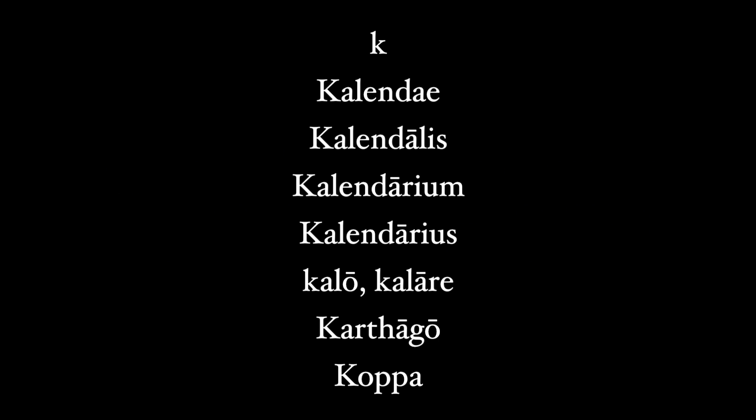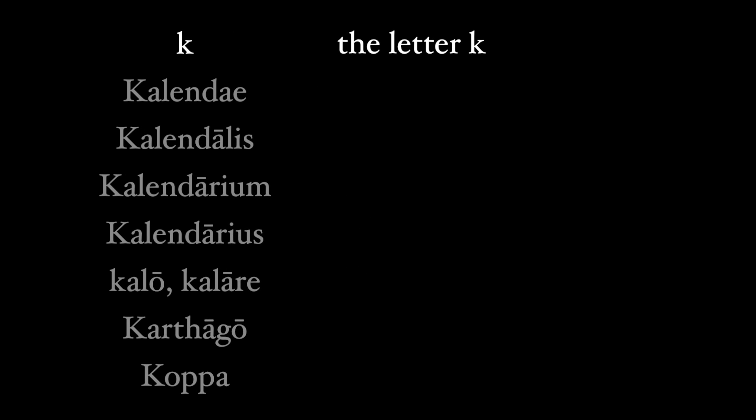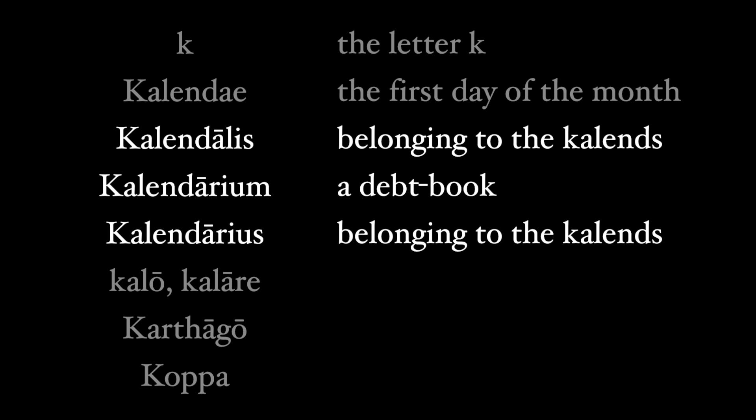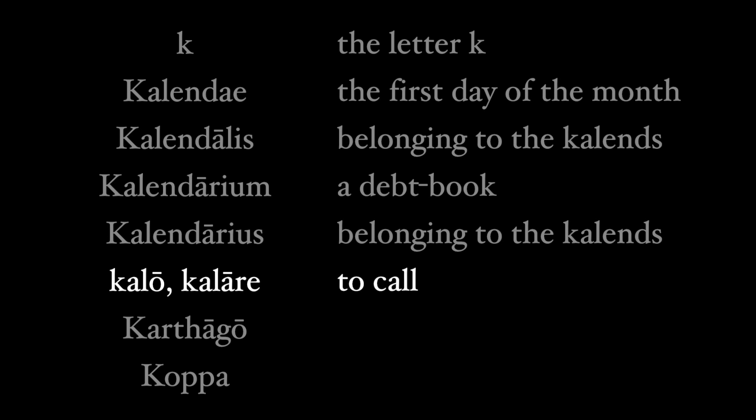Here are the eight entries in the Lewis and Short dictionary under K. The first entry is just the letter itself, and then we have Calendae, the term for the first day of each month. Next we have three more words that relate to Calendae: the verb Calo, Calare, which is an ancient verb meaning to call or proclaim. Calo is etymologically related to the English word 'hail,' and it's also related to the word Calendae, since the first of every month was the day on which the order of the days was announced.